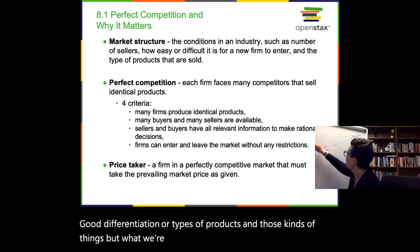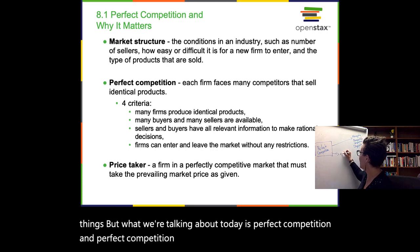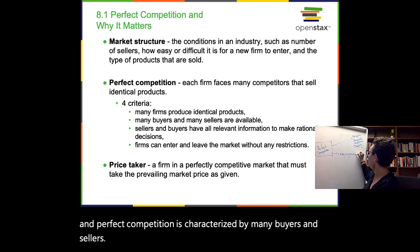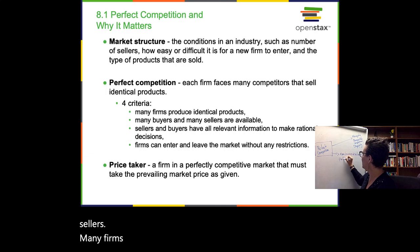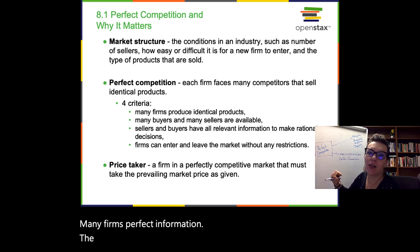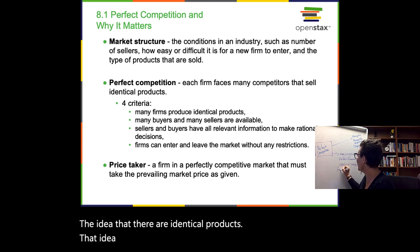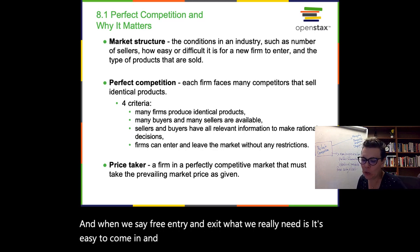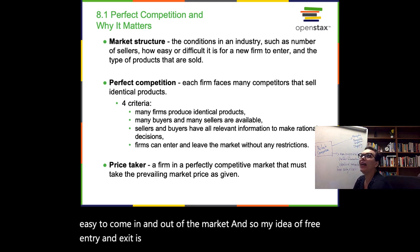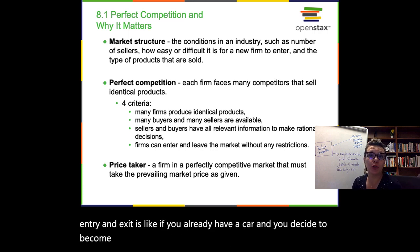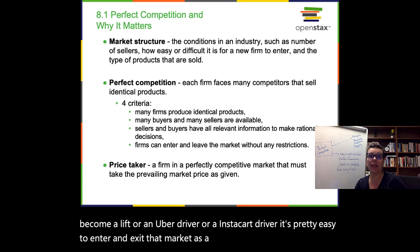Perfect competition is characterized by many buyers and sellers, many firms, perfect information, identical products, and free entry and exit. When we say free entry and exit, we mean it's easy to come in and out of the market. For example, if you already have a car and you decide to become a Lyft, Uber, or Instacart driver, it's pretty easy to enter and exit that market as a producer.